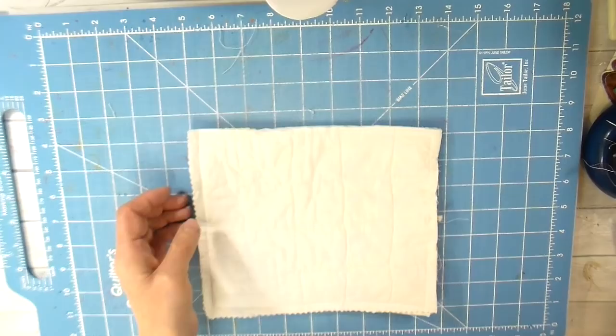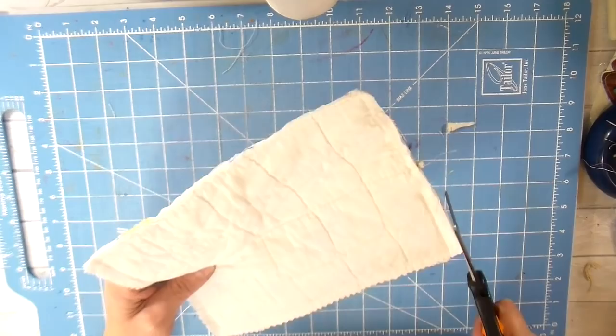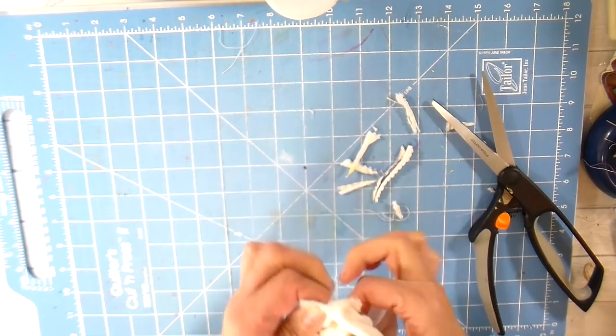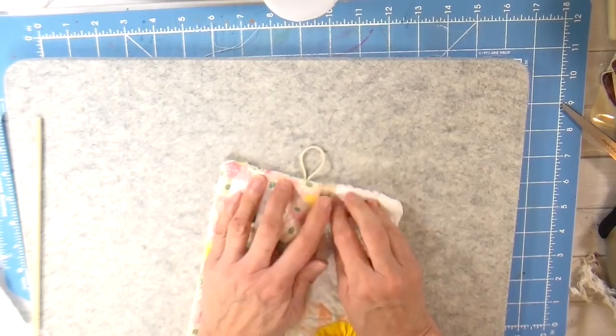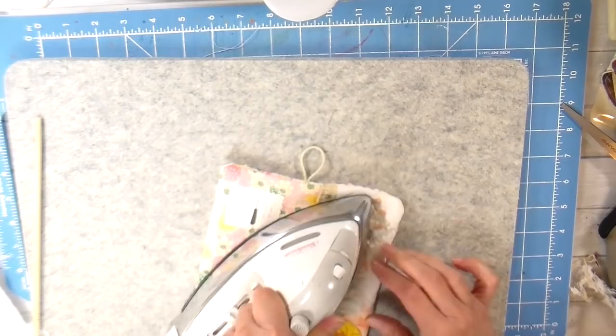I'm going to be stitching this around, and I am going to be backstitching at the beginning and the end. Trimming my corners, and now turning this whole thing so that the right sides are out. Just getting my fingers in there, and then I'm also using my pokey tool to get those corners poked out.